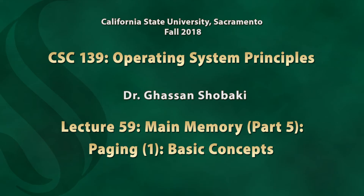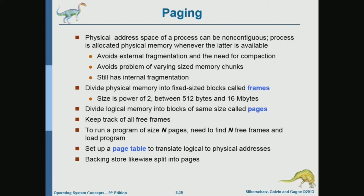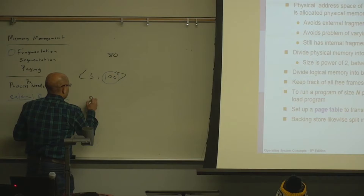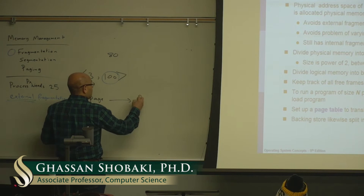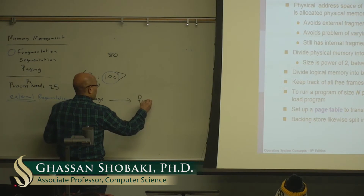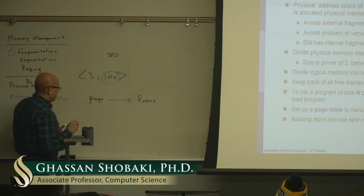We will talk about paging. In paging, we divide the address space of our process into equal pieces. Each piece we call a page. And each page will get mapped to a frame in physical memory.